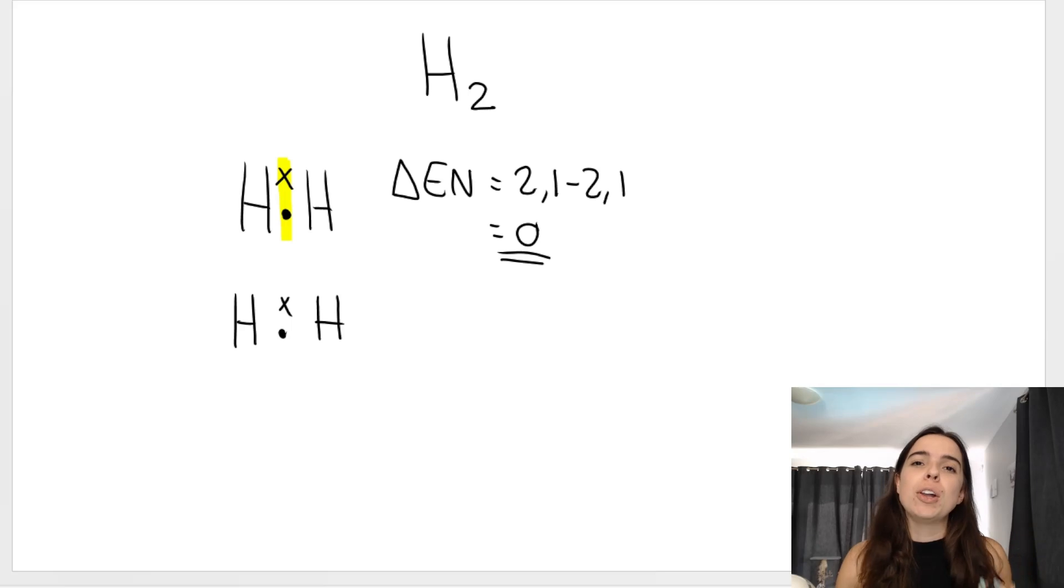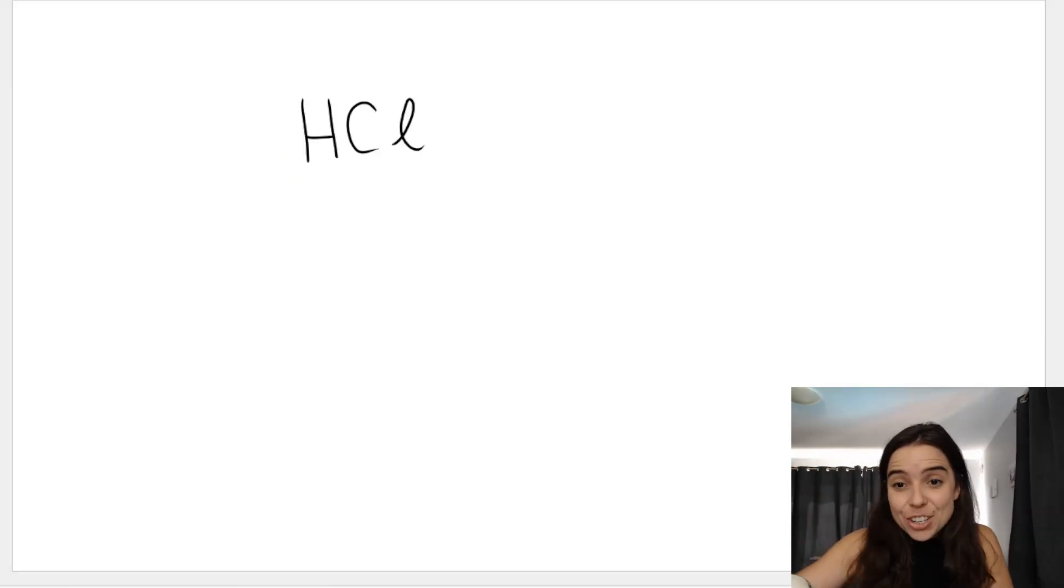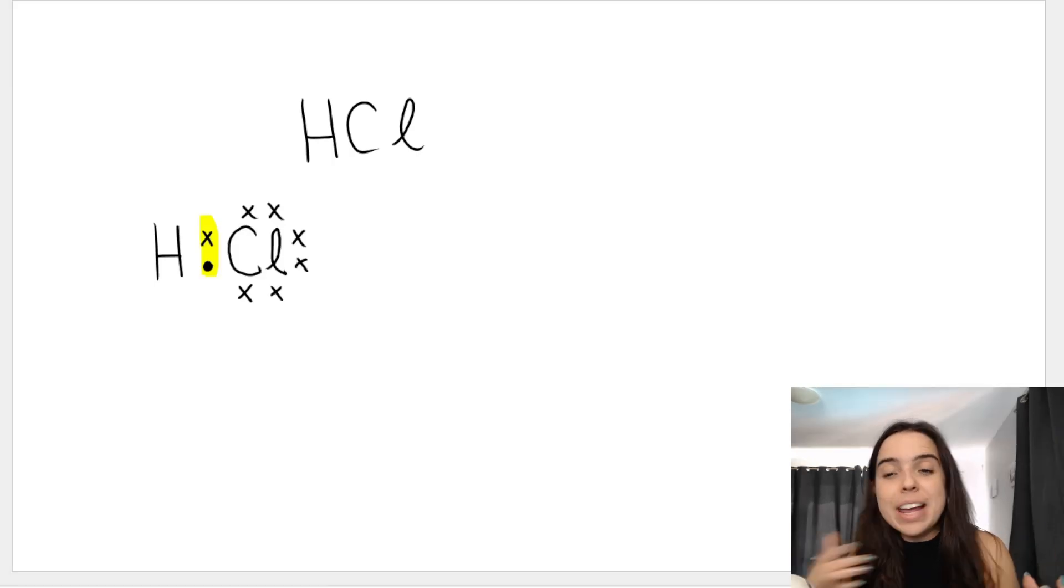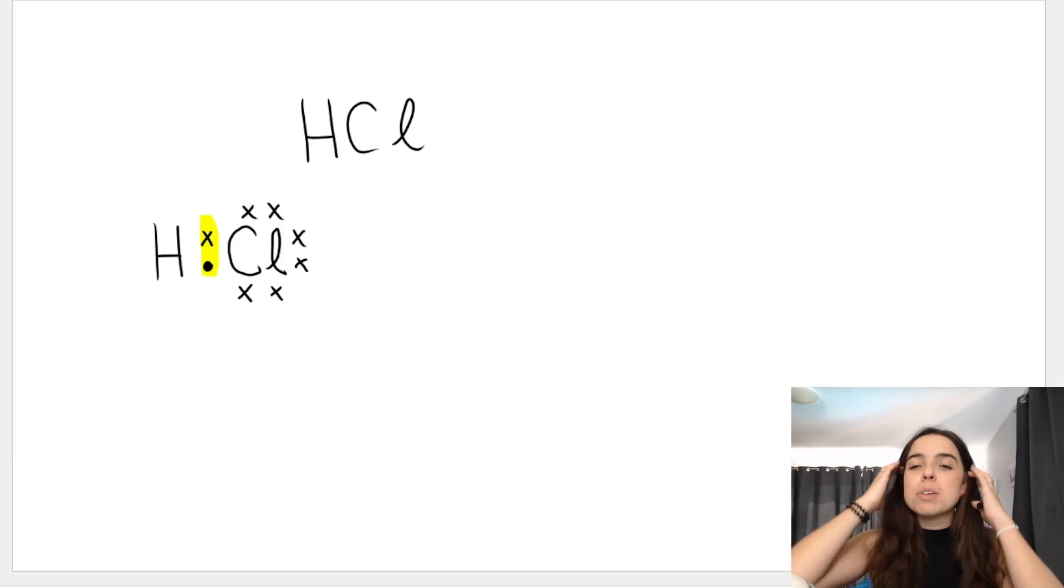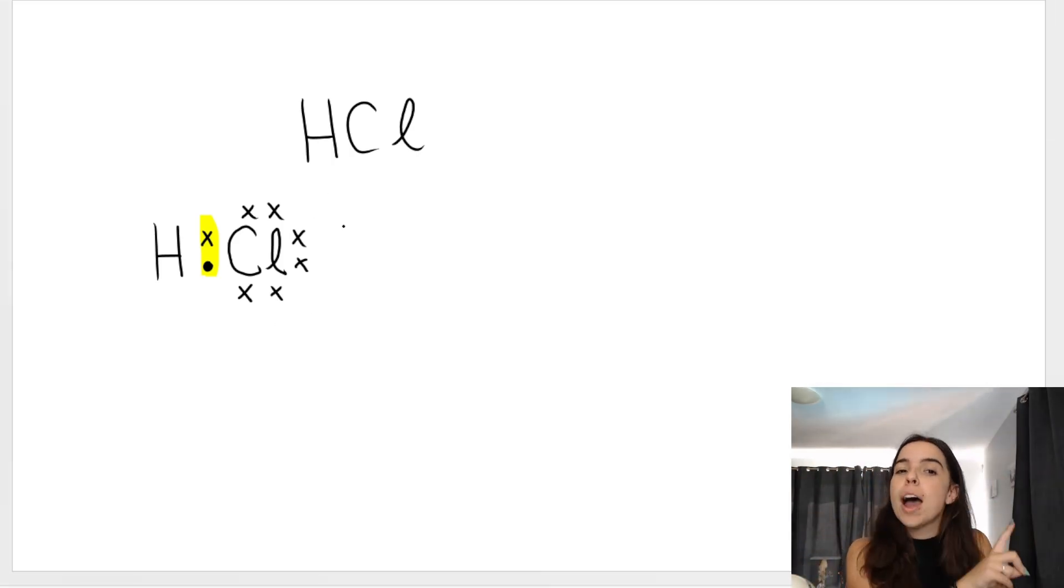However, if we have a molecule like this one, HCl, and I work out the difference in electronegativity, first of all, if you have to draw the Lewis dot diagram, you know that hydrogen has one and chlorine has seven. So a single covalent bond is formed, as I show over there and as I've highlighted.